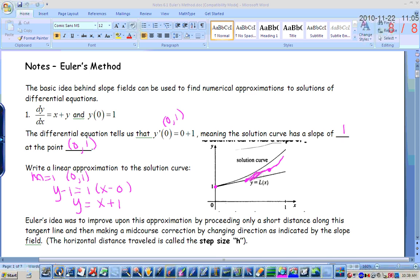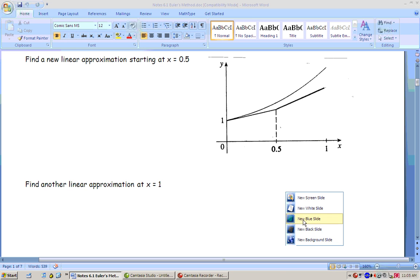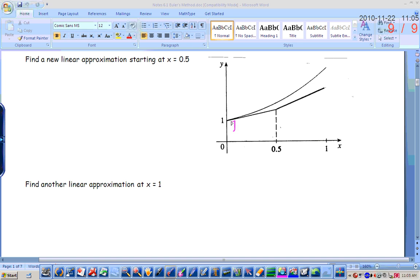Alright, so the original tangent line was y equals x plus 1, and what I want to do is, I want to stop that tangent line where x is 0.5, and then I'm going to write a new linear approximation starting at x equals 0.5. So for that old tangent line of y equals x plus 1, how could I find the y value right here? Good. So y would equal 0.5, plugging in 0.5 for x plus 1, or 1.5. So I have the point (0.5, 1.5). And then I want to go back to my differential equation, and using that slope, I want to find the slope at the point (0.5, 1.5). Well, what was the formula for the slope, or for dy/dx? x plus y.